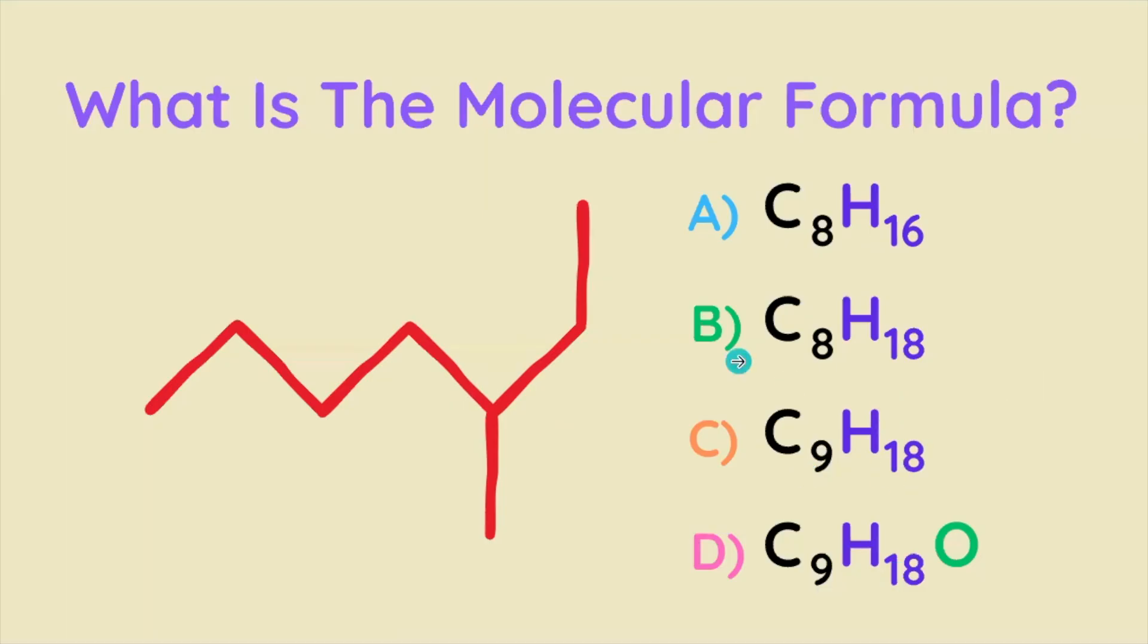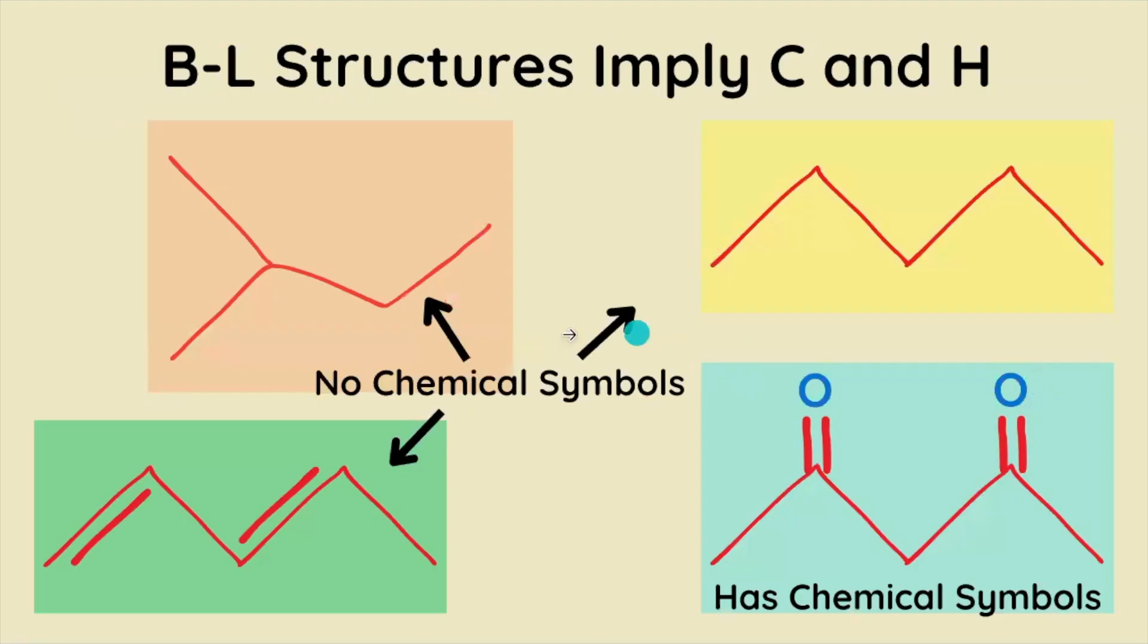This molecule is presented in bond line structure and the thing about bond line structures is that carbon and hydrogen are implied, but any other element must have their chemical symbols written in for that element to be present in the compound.